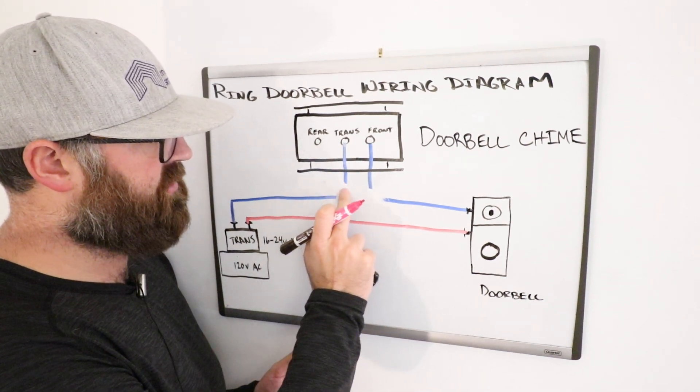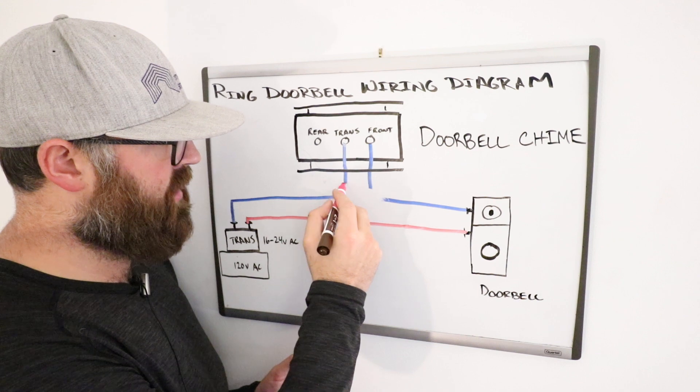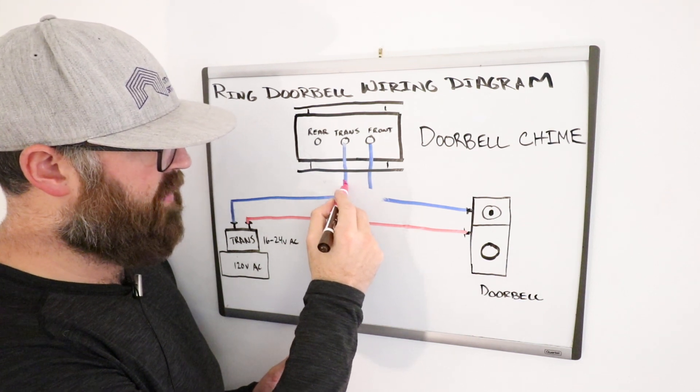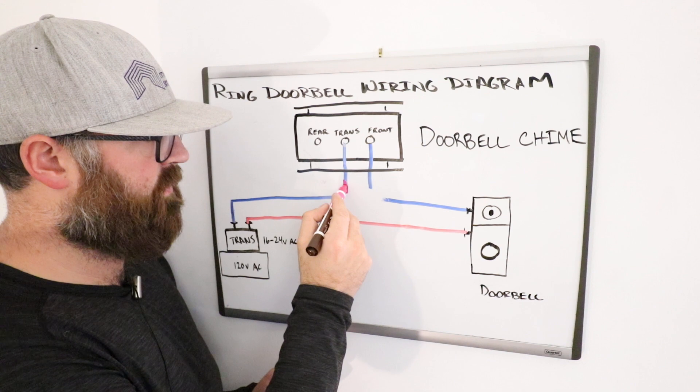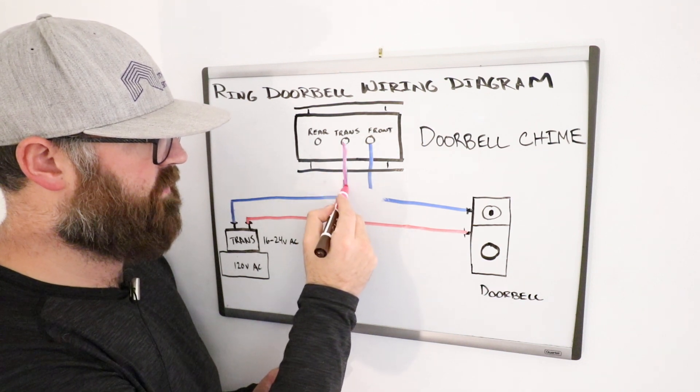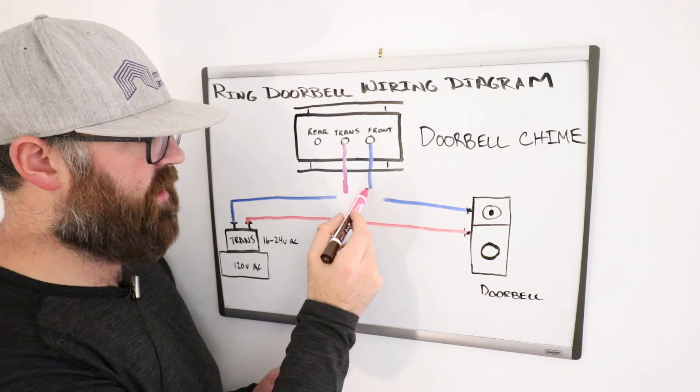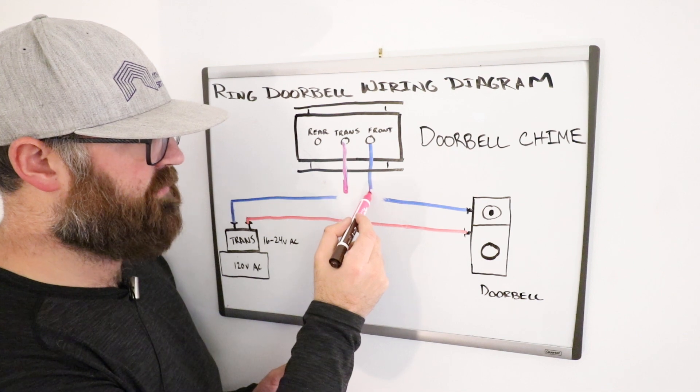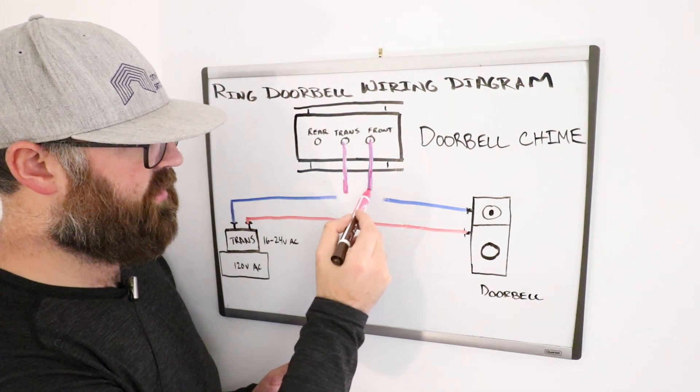So you're going to connect one end of that doorbell power adapter to the transformer terminal, just like so. You're going to connect the other end of that doorbell adapter to the front door terminal, like so.